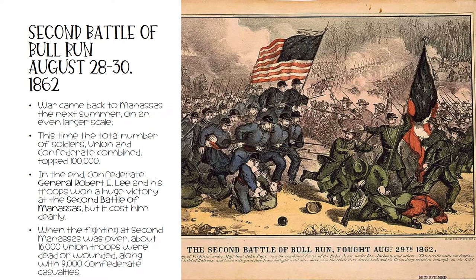The next summer, from August 28th through the 30th, 1862, war came back to Manassas on an even larger scale. The total number of soldiers, Union and Confederate combined, topped 100,000 men. In the end, Confederate General Robert E. Lee and his troops won a huge victory at the Second Battle of Manassas, but it cost him dearly. When the fighting at 2nd Manassas was over, about 16,000 Union troops were dead or wounded, along with 9,000 Confederate casualties.